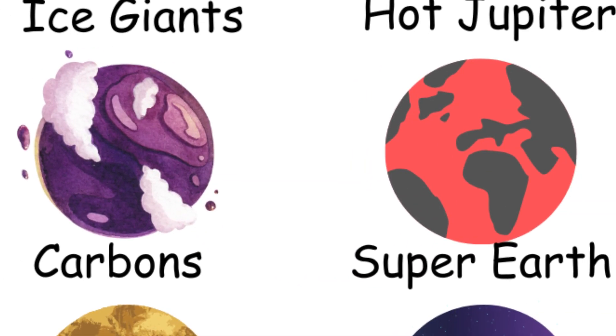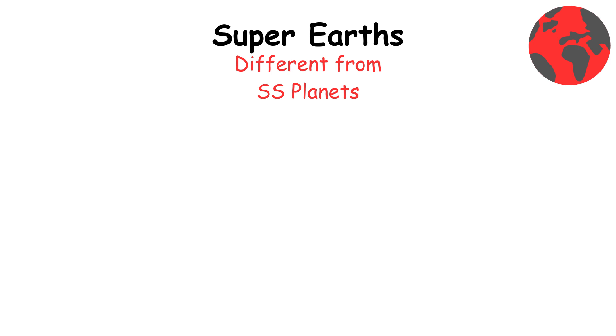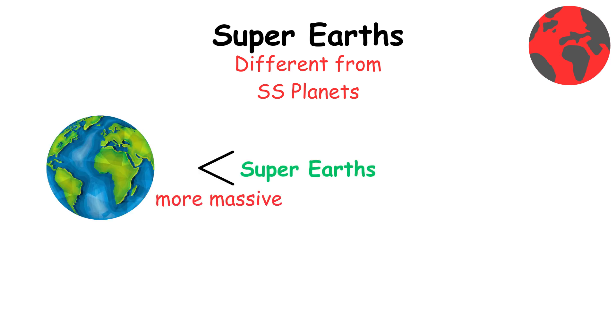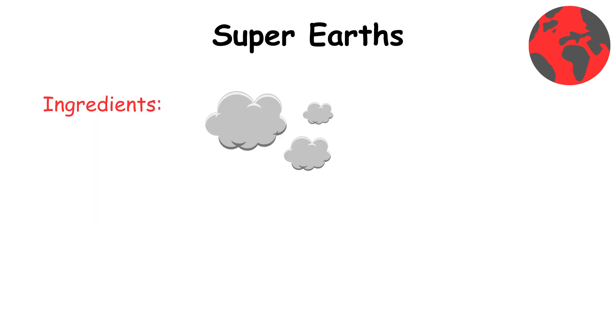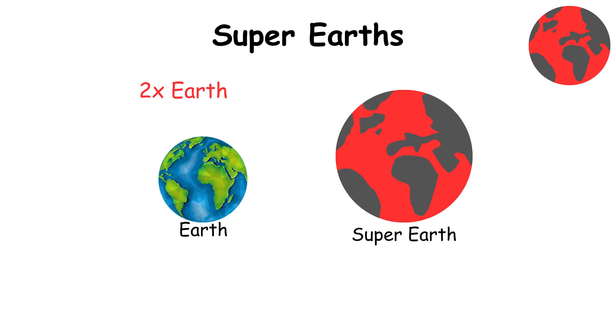Super Earths are a class of planets, unlike any in our solar system, that are more massive than Earth yet lighter than ice giants like Neptune and Uranus. They can be made of gas, rock, or a combination of both, and are between twice the size of Earth and up to 10 times its mass.